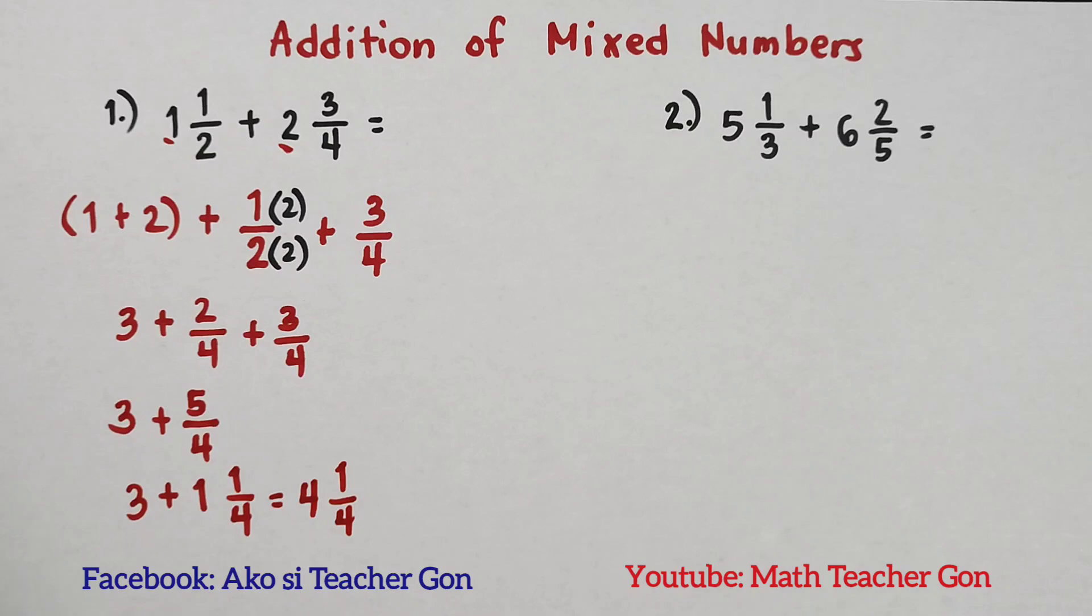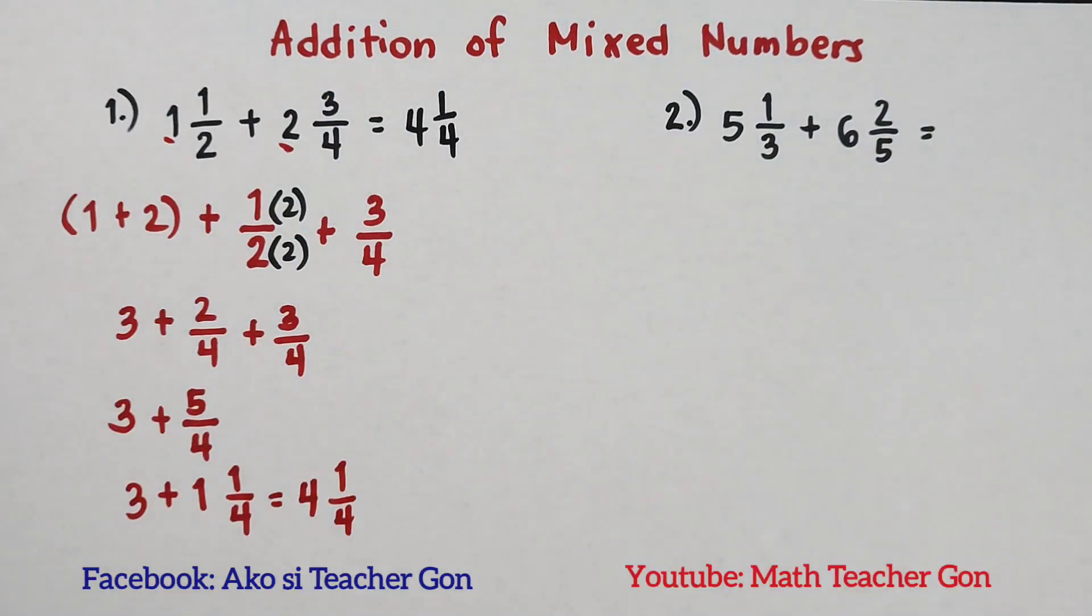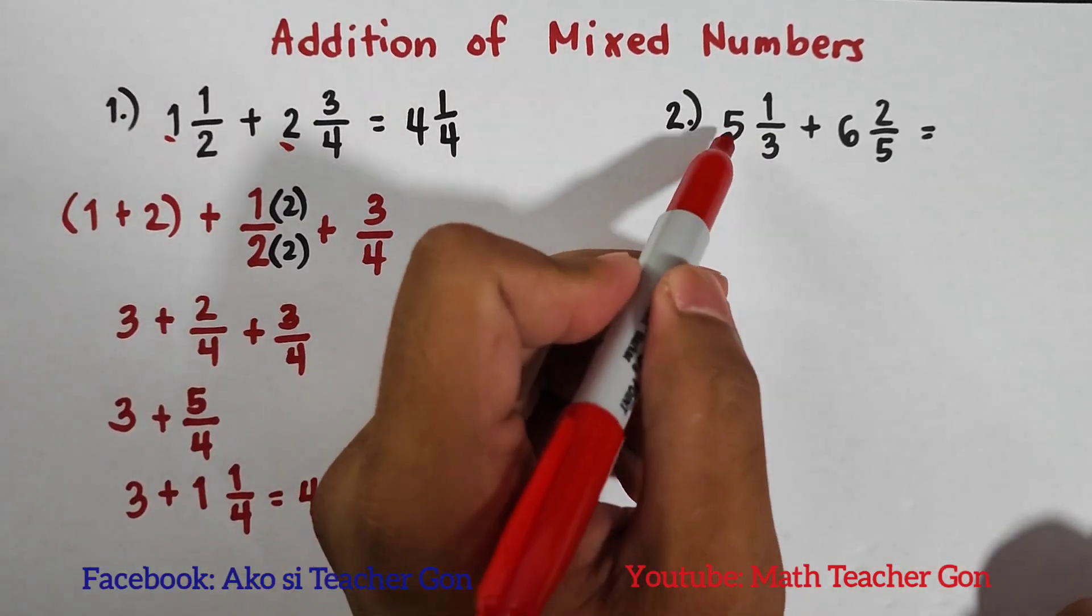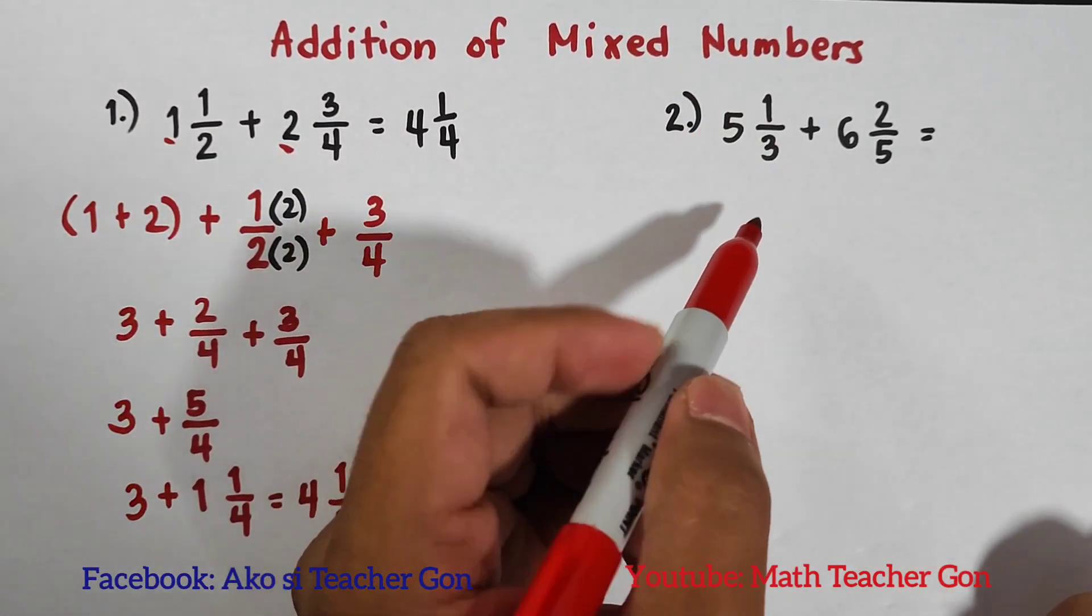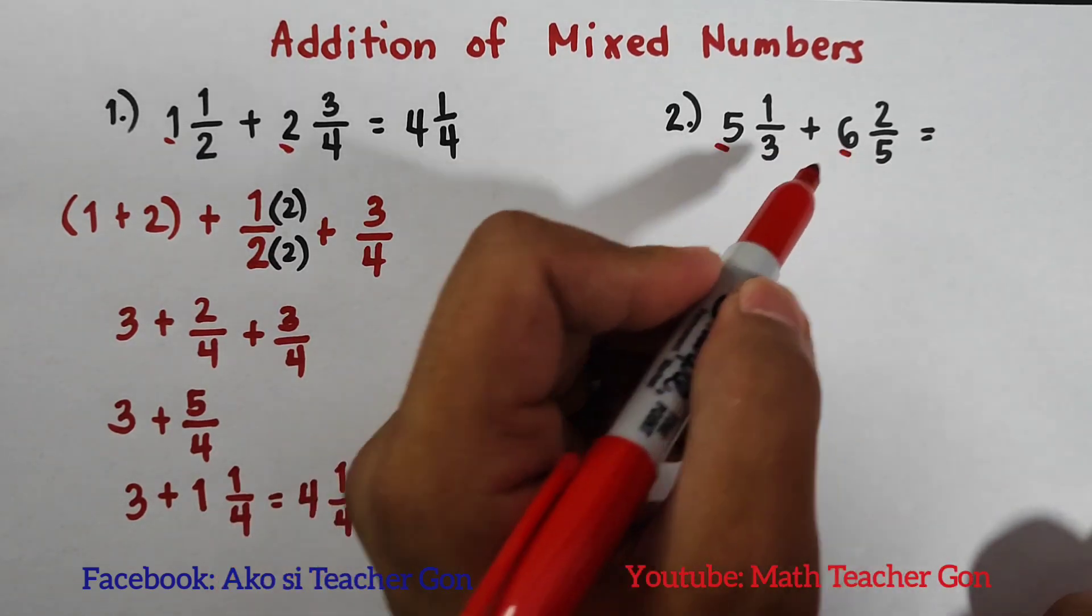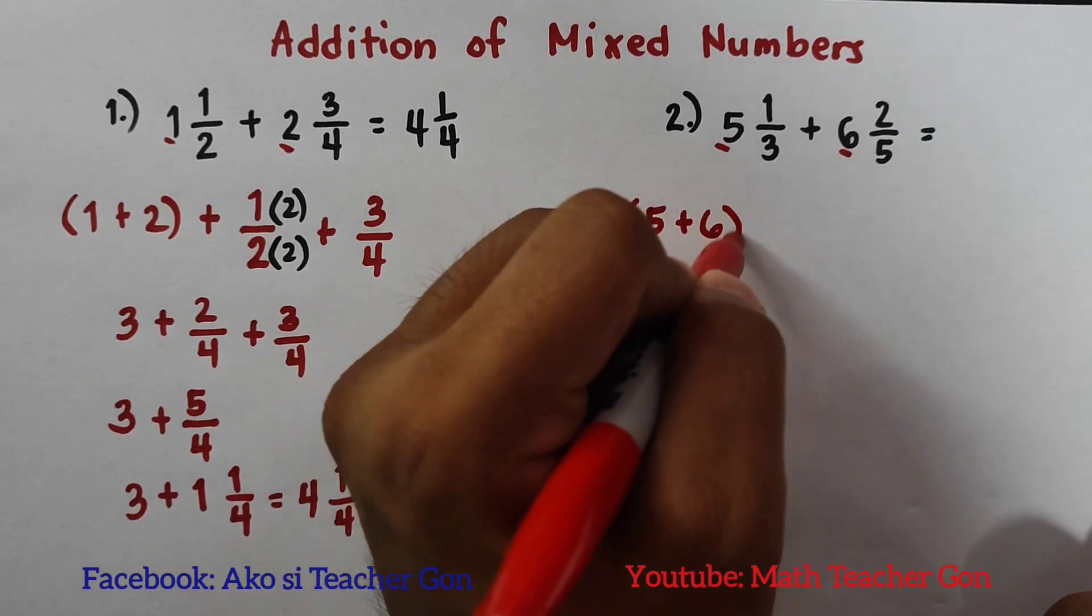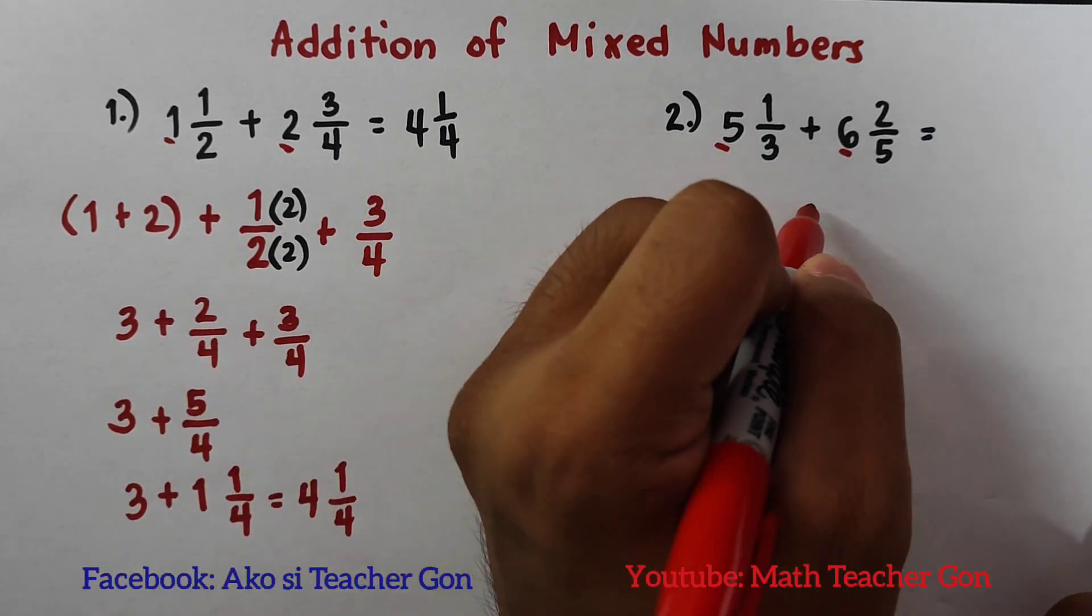Let us go with example number two and let's use the same method. Here we have 5⅓ + 6⅖. Add the whole numbers separately: we have the quantity of (5 + 6), plus your ⅓.